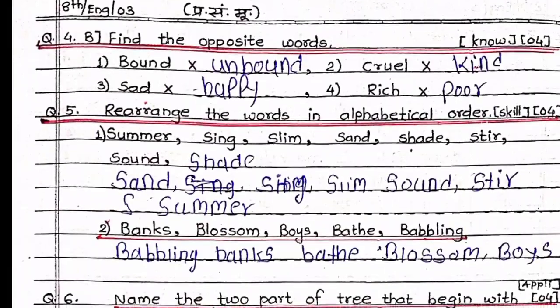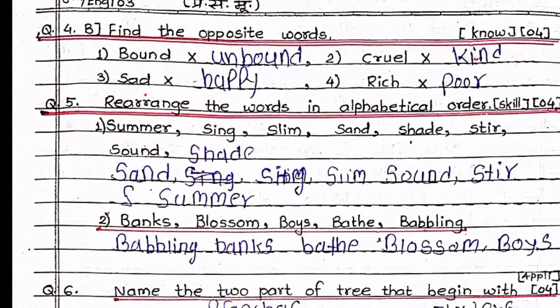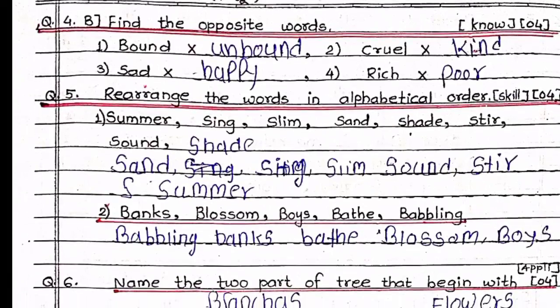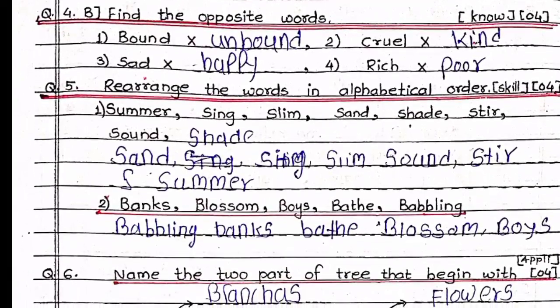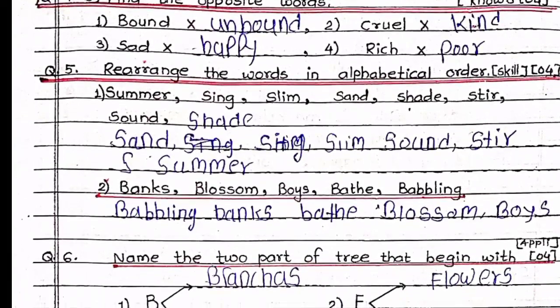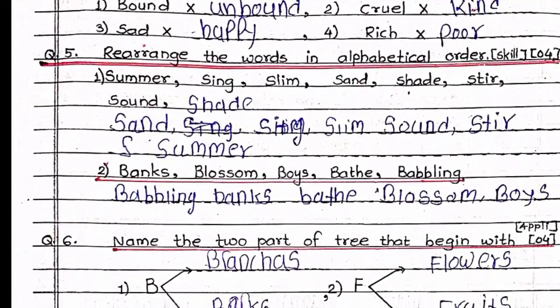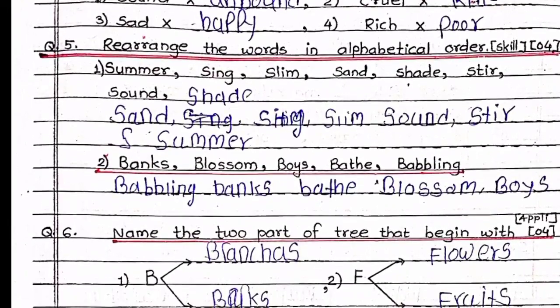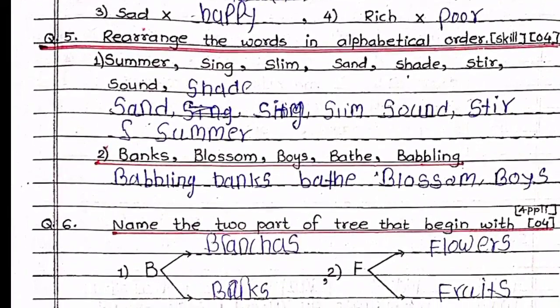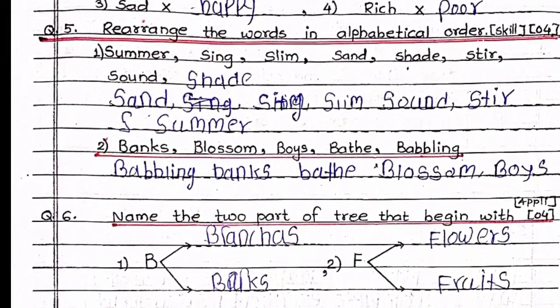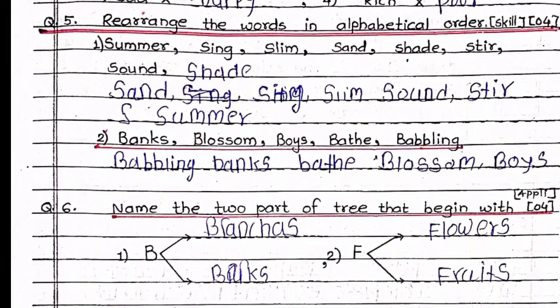Question 4B: Find the opposite words. Bound — Unbound. Cruel — Kind. Sad — Happy. Rich — Poor.